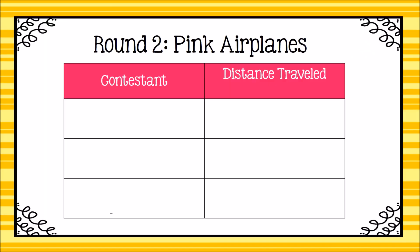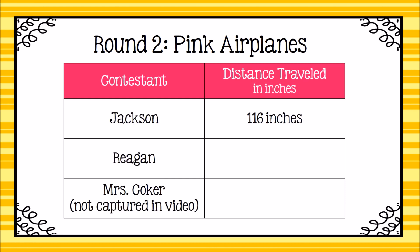Here are the round two distances traveled. We are measuring in inches. This time, Jackson's plane traveled 116 inches, Reagan's plane traveled 108 inches, and poor Miss Coker's plane only traveled 99 inches. At this point, pause to determine who our round two first, second, and third place winners are.